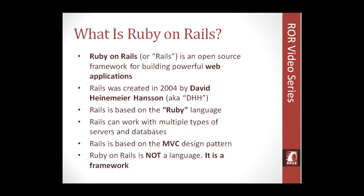Rails is based on the MVC design pattern, which is Model-View-Controller. You're going to hear that a lot throughout this series. It's one of the most popular and, in my opinion, best design patterns available. What it does is basically separate what the user sees — the HTML and the presentation — from the controllers, the routing system, and also the business logic, which is in the model and usually consists of database queries.